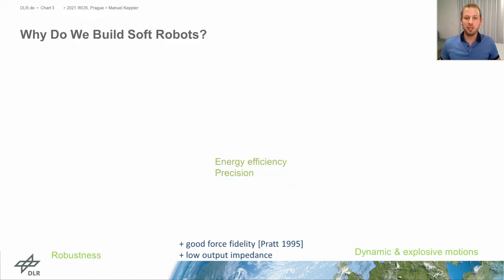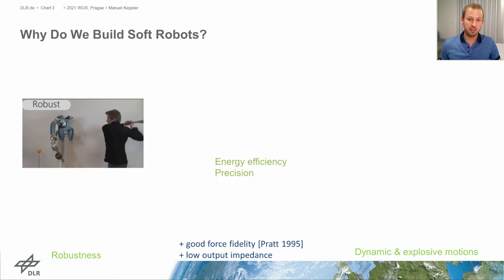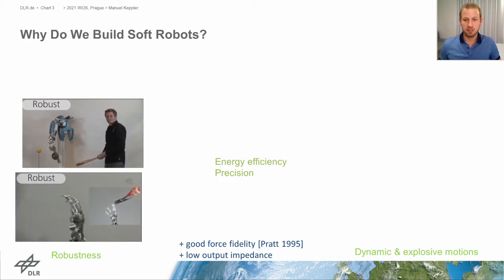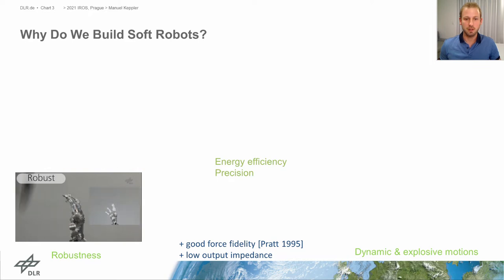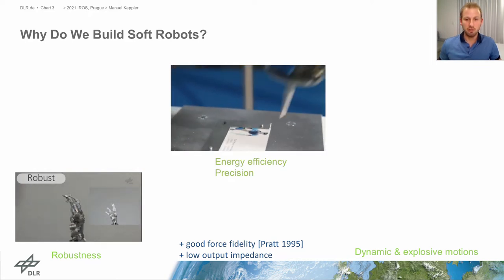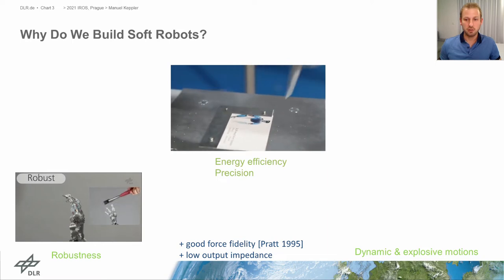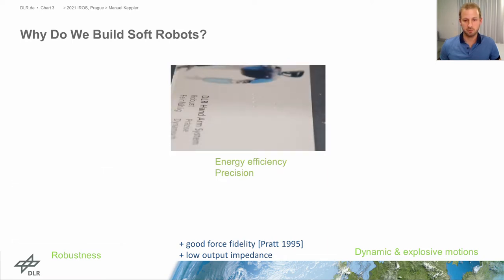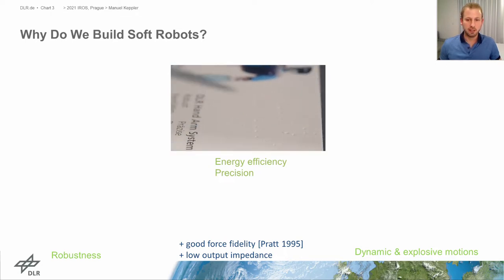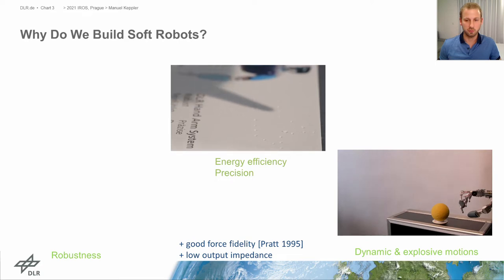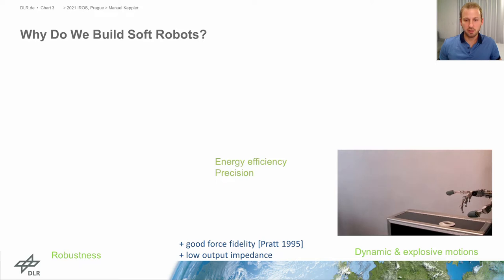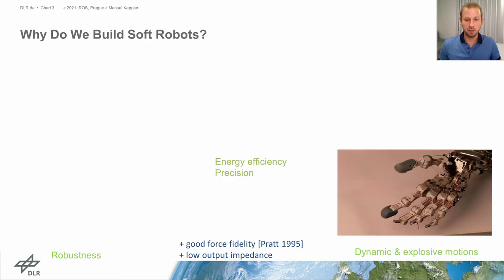You might ask, why do we build soft robots? For instance, compliant robots provide many benefits such as increased robustness against mechanical impacts as demonstrated here. Further, they have the potential for being highly energy efficient during cycling motions, and they are capable of highly dynamic and explosive motions. Last but not least, as argued by Pratt, they showcase good force fidelity and low output impedance.